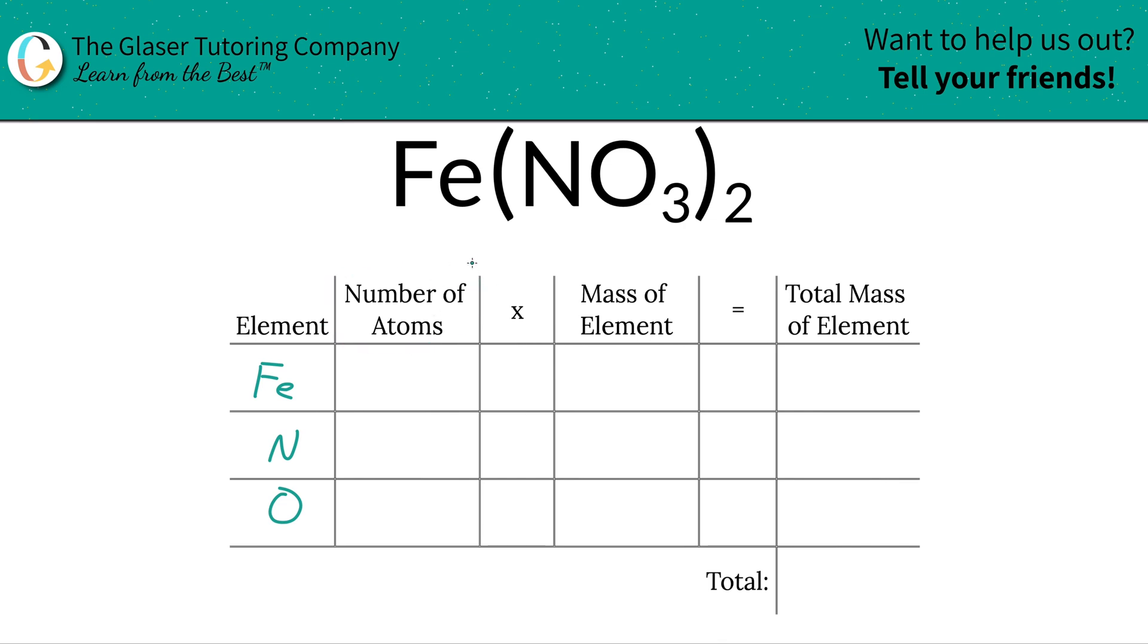Then we're going to do the number of atoms. We're going to write them down. That's where the subscripts come into play. So if you don't see a subscript at the bottom of a particular element, that means that there is only one of them. So one iron.